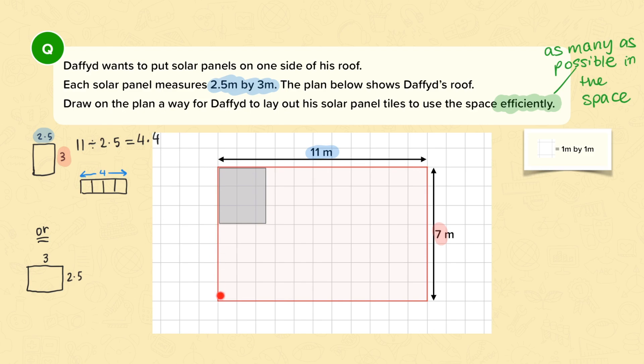And then in this direction you've got 3 metres going into 7 metres, so 7 divided by 3, which is 2 point something, or 2 whole solar panels. So using this arrangement you'll have 4 by 2 solar panels, which gives you 8 panels in total.